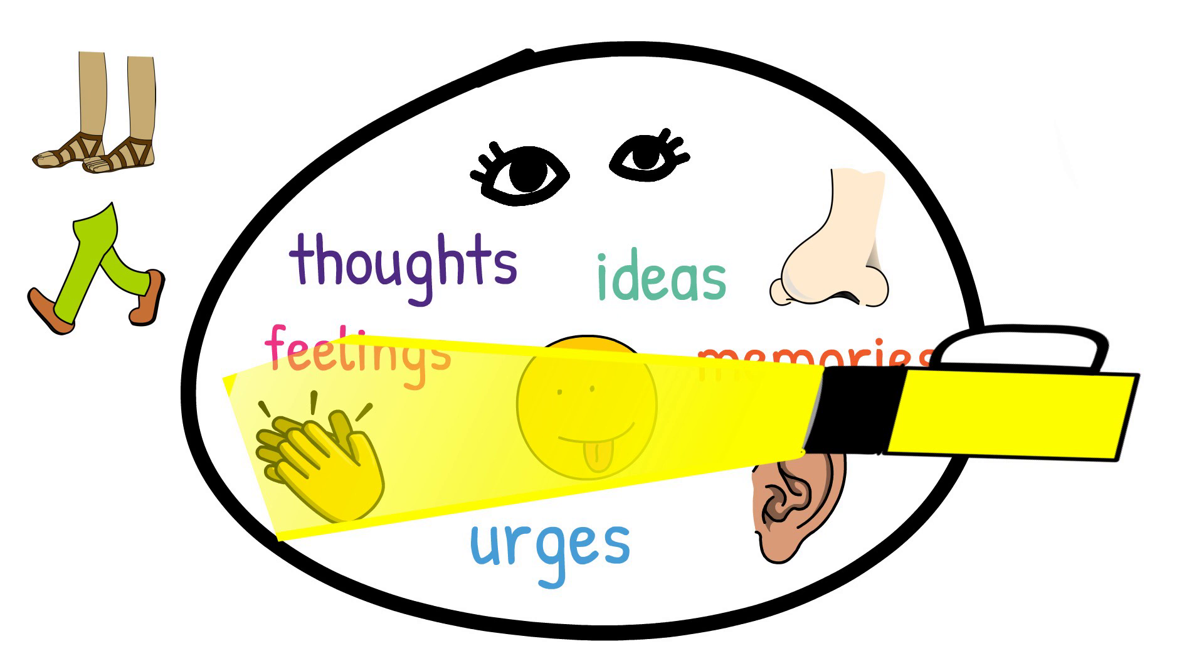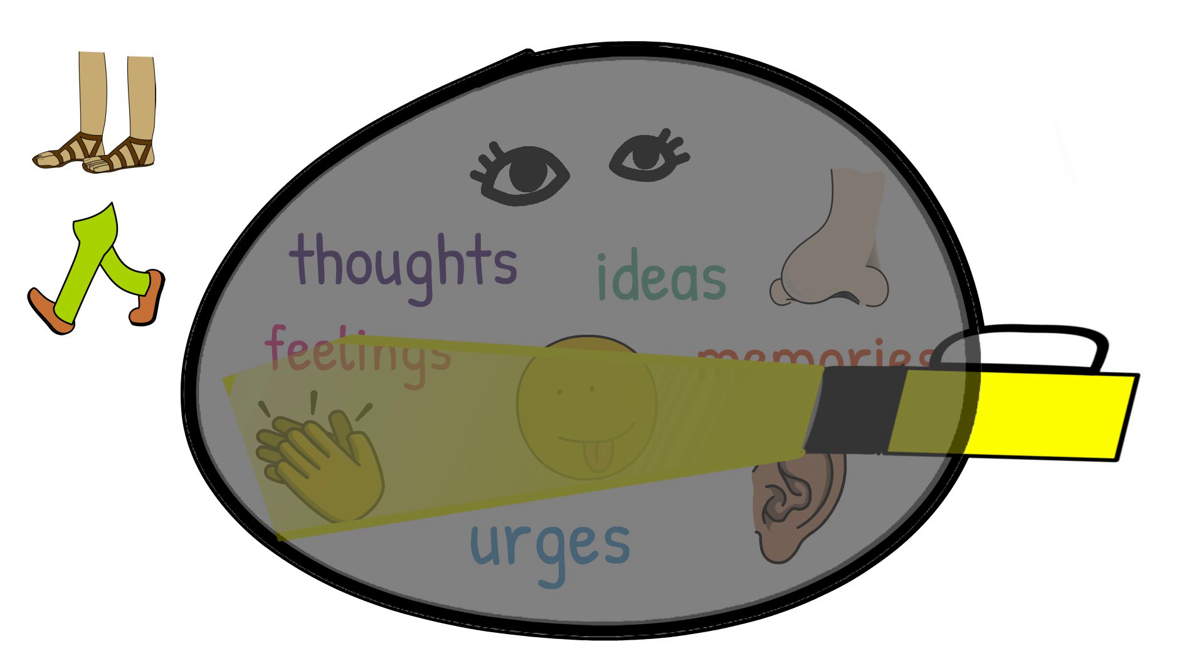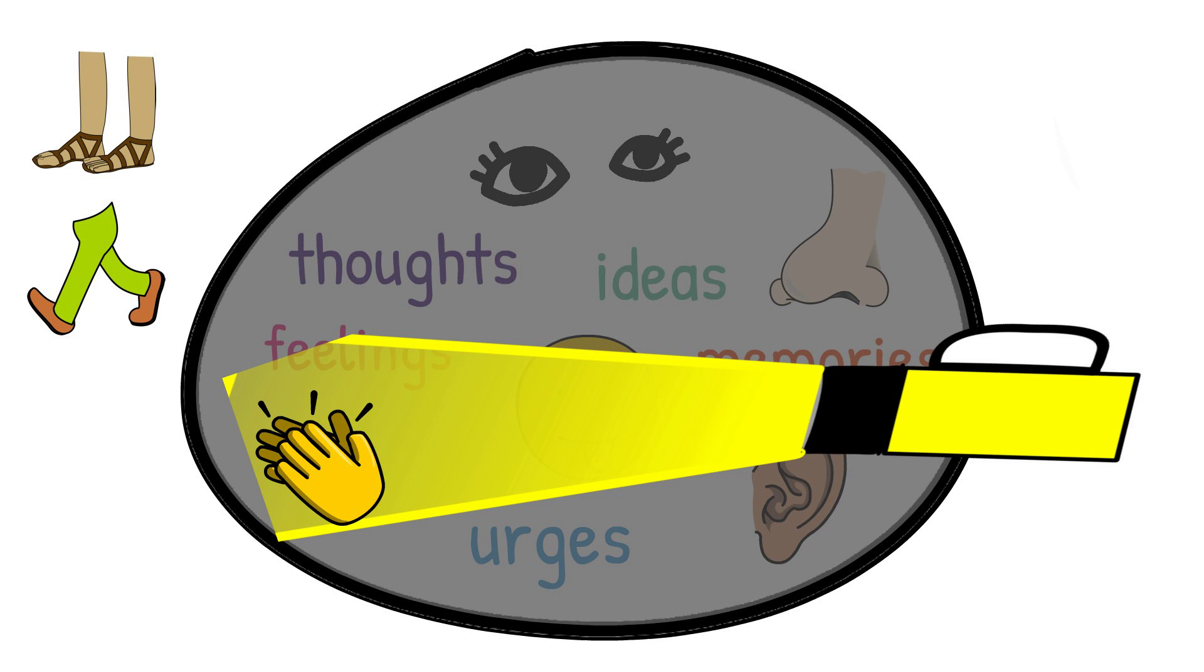But did you notice that something else happened? All of the other stuff in your mind got a bit quieter. Whenever the torch shines too brightly on one part of the brain it's hard to notice the other things in there.